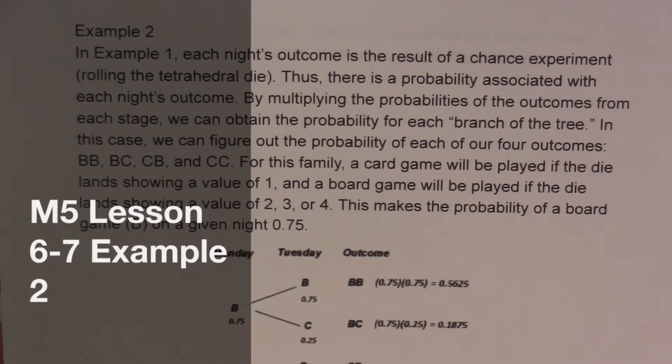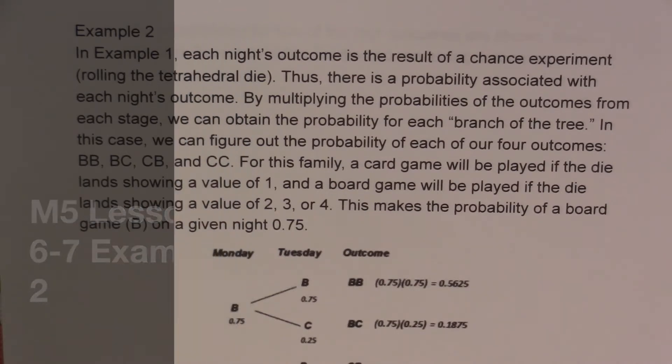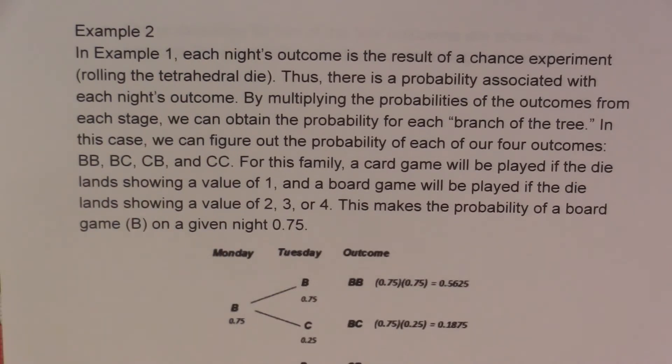Example 2. In example 1, each night's outcome is a result of a chance experiment, rolling the tetrahedral die. Thus, there is a probability associated with each night's outcome. By multiplying the probabilities of the outcomes from each stage, we can obtain the probability for each branch of the tree.